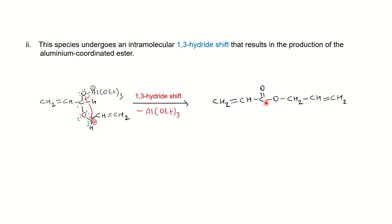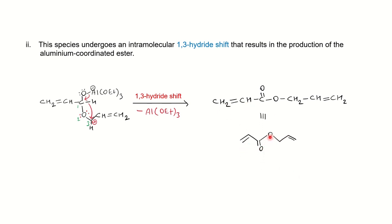After the 1,3-hydride shift, a carbonyl group forms and the oxygen is attached to a –CH₂–CH=CH₂ unit. The final product contains a vinyl group, an ester group, and an allyl group. This is the product of the disproportionation reaction under the Tishchenko Reaction.